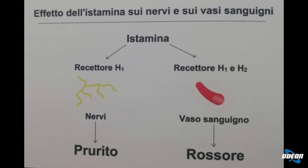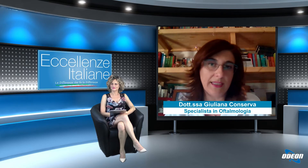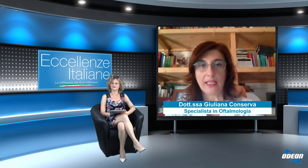L'istamina è uno dei principali mediatori della crisi allergica. Il fatto che la forma allergica più frequente sia proprio la congiuntivite è perché le cellule che producono istamina, cioè i mastociti, sono molto rappresentate a livello congiuntivale, in quanto la congiuntiva è anche molto vascolarizzata e innervata. Ecco perché parliamo di congiuntiviti allergiche. Tutti i trattamenti che dobbiamo effettuare sono legati a queste caratteristiche locali della congiuntiva.